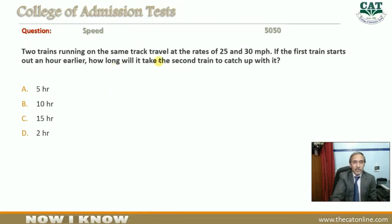Two trains running on the same track travel at the rates of 25 and 30 miles per hour. If the first train starts out an hour earlier, how long will it take the second train to catch up with it?